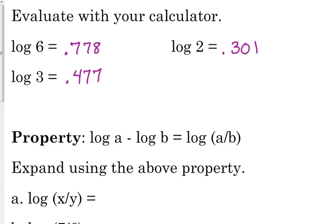So can we combine these two numbers, .778 and .301, to get .477? We could subtract them, right, because if we add the .477 and the .301 we get .778, but if we do .778 minus .301, that's going to give us the .477. So here's our last property.